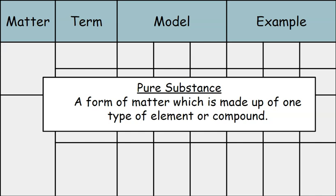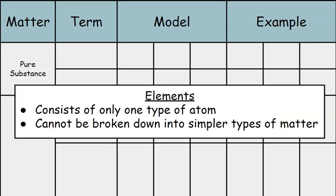A pure substance is a form of matter which is made up of one type of element or compound. An element consists of one type of atom, and it cannot be broken down into simpler types of matter.